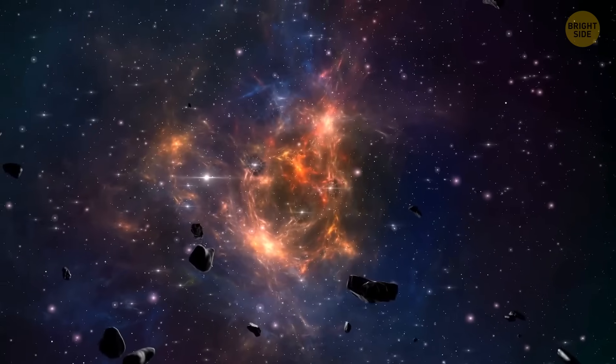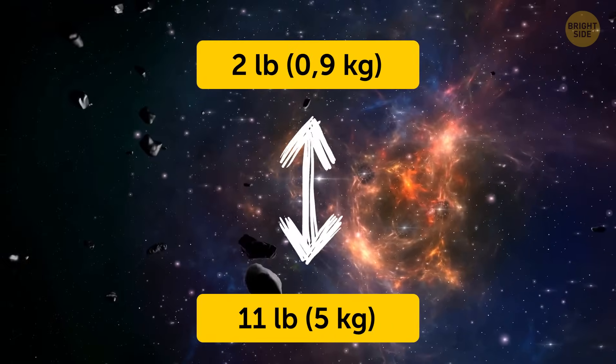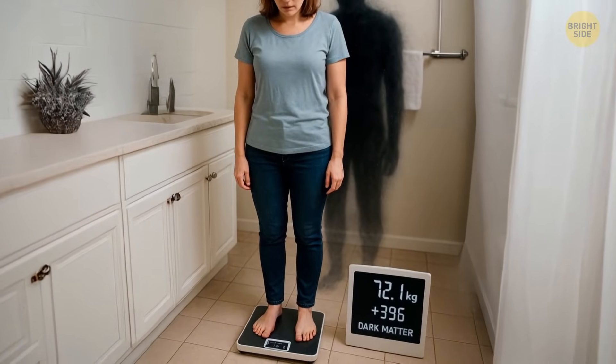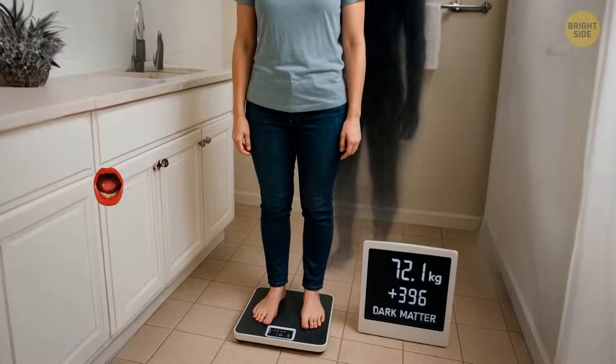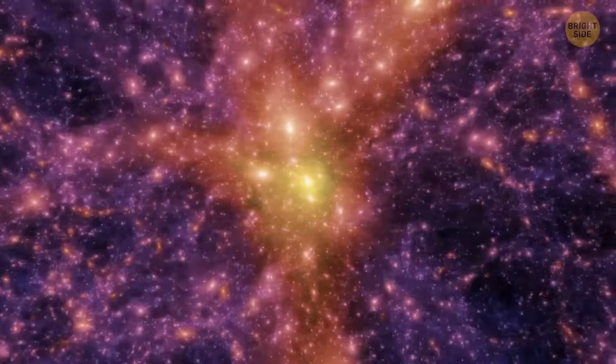So they called it the dark matter, and then realized that this invisible part makes up about 85% of the mass of our world. That means that for about every 2 pounds of regular matter, there are 11 pounds of dark matter. Wow. Try not to think of the ramifications of that the next time you step on the scale.